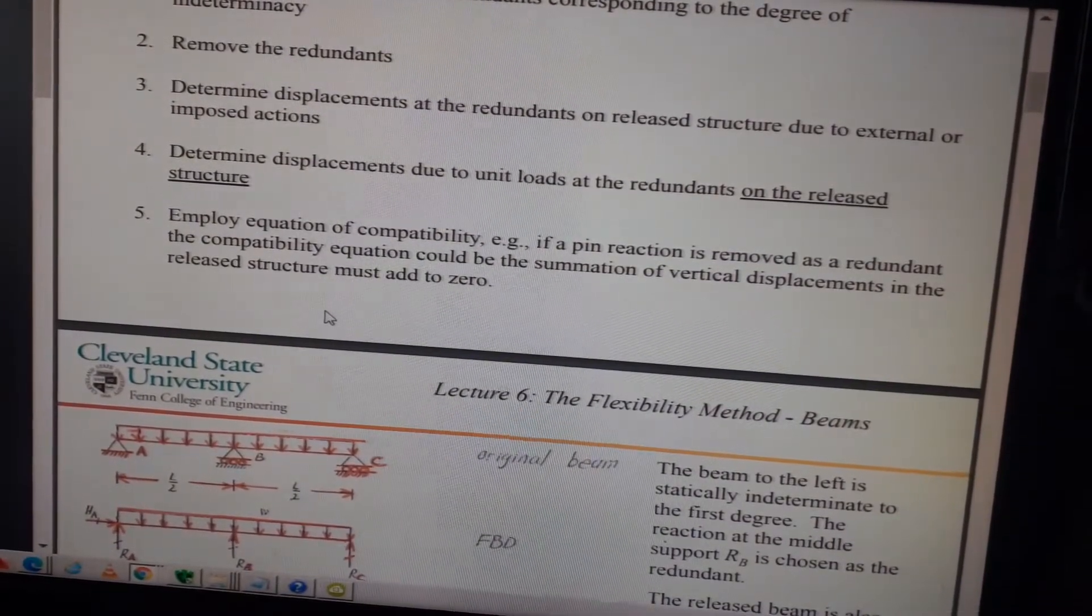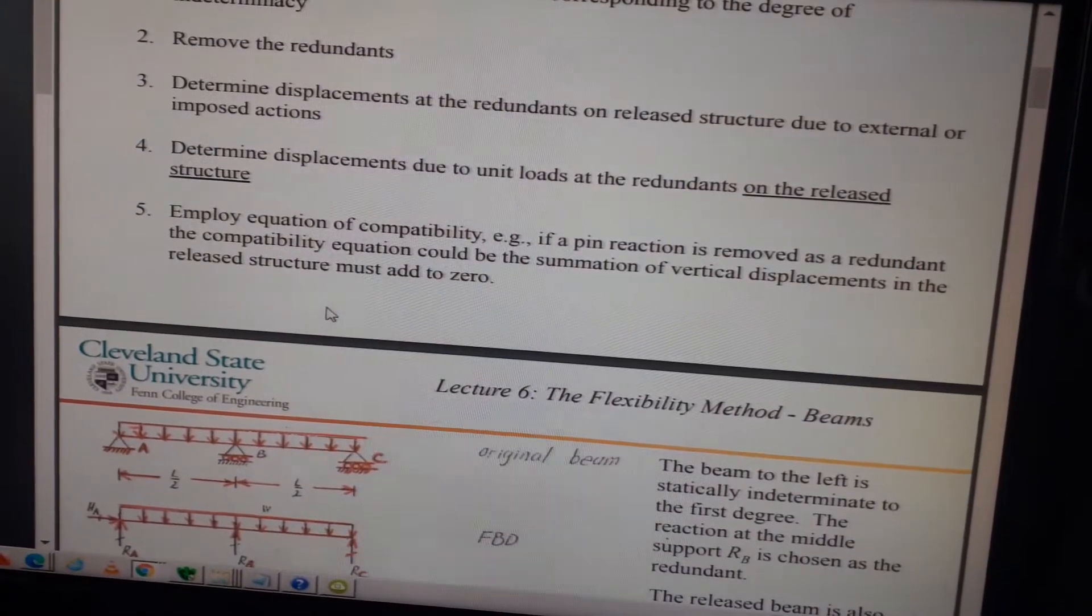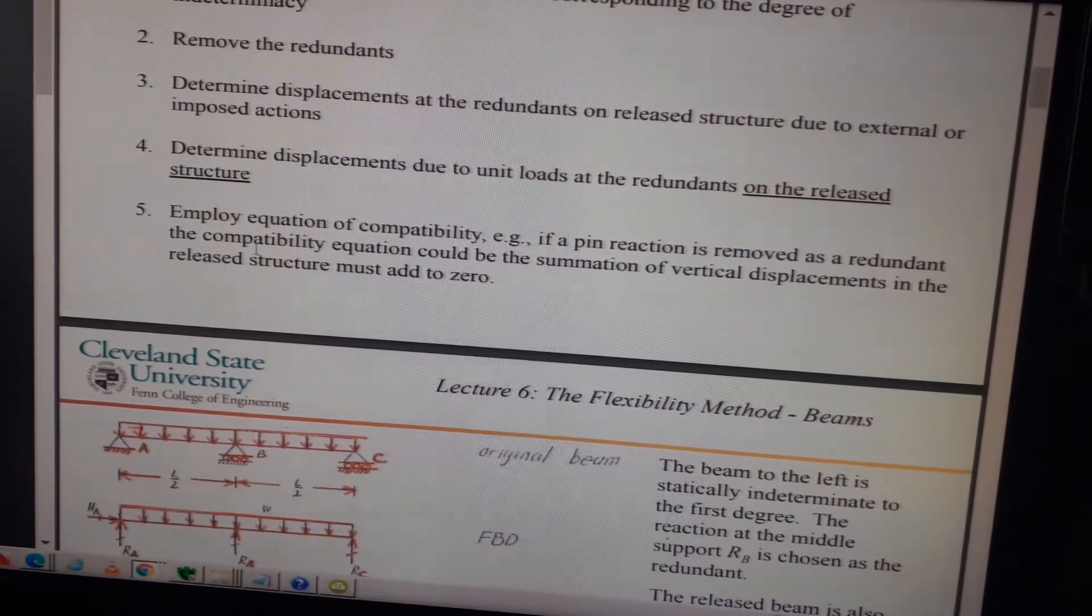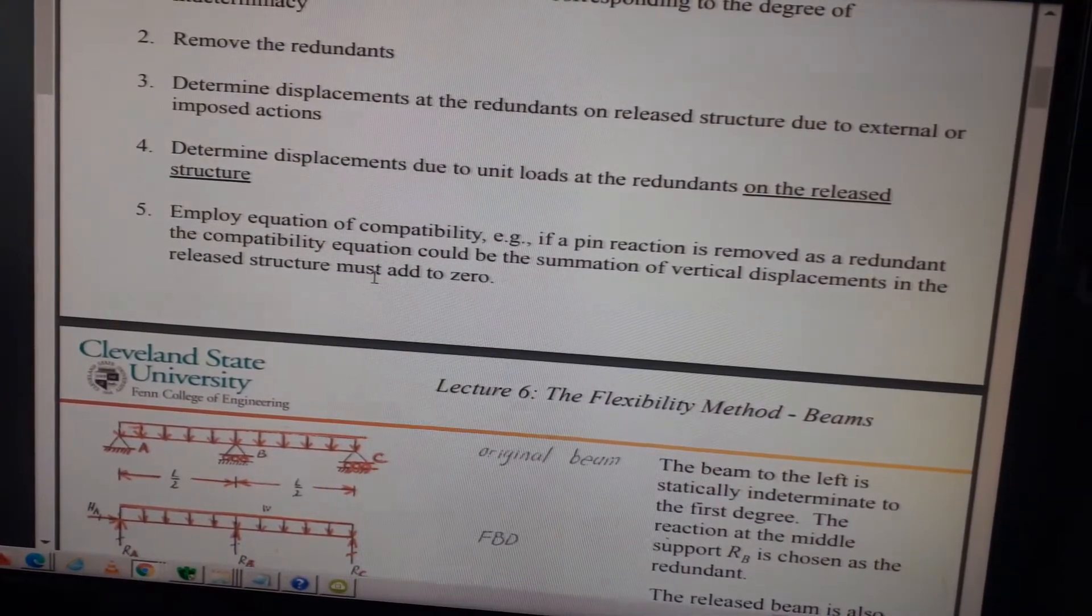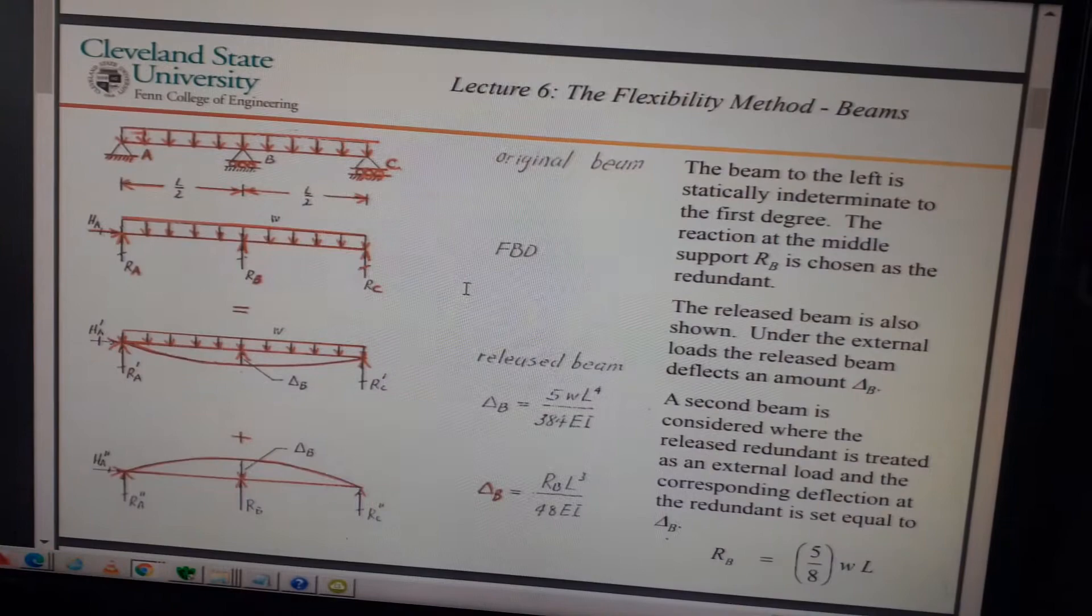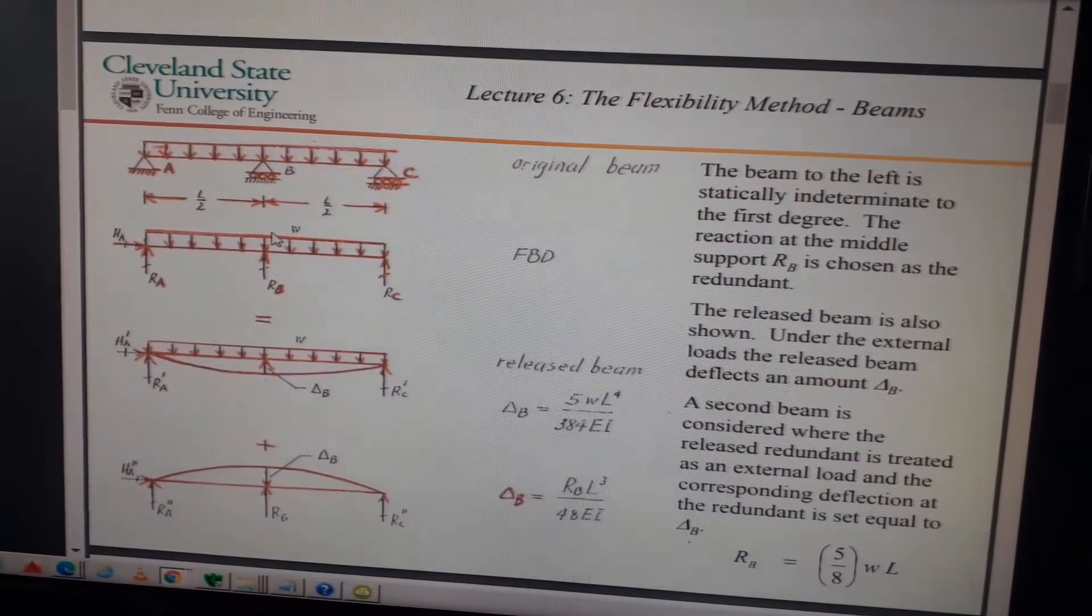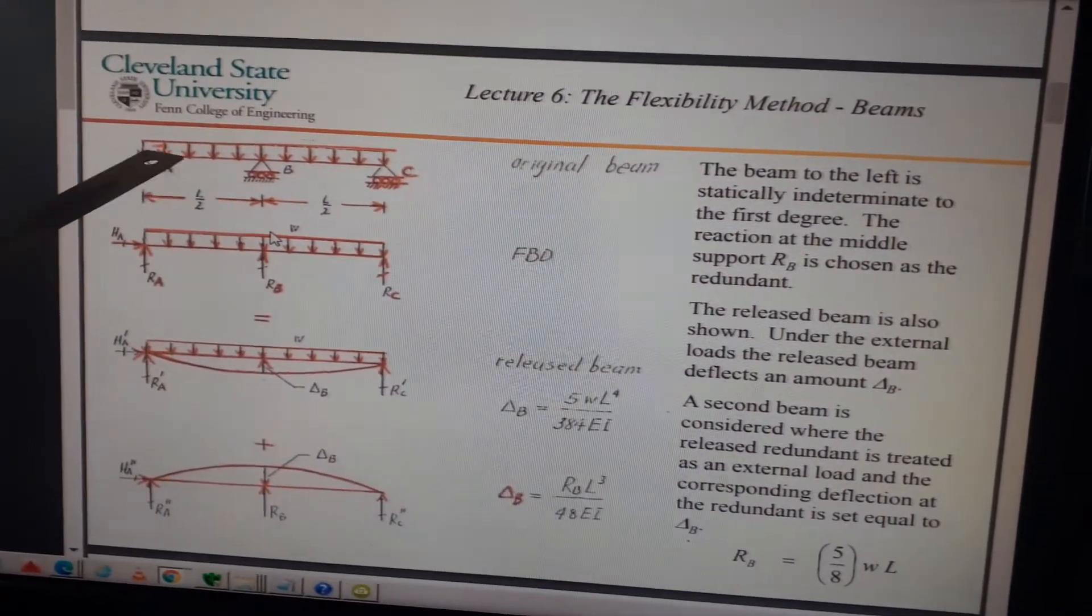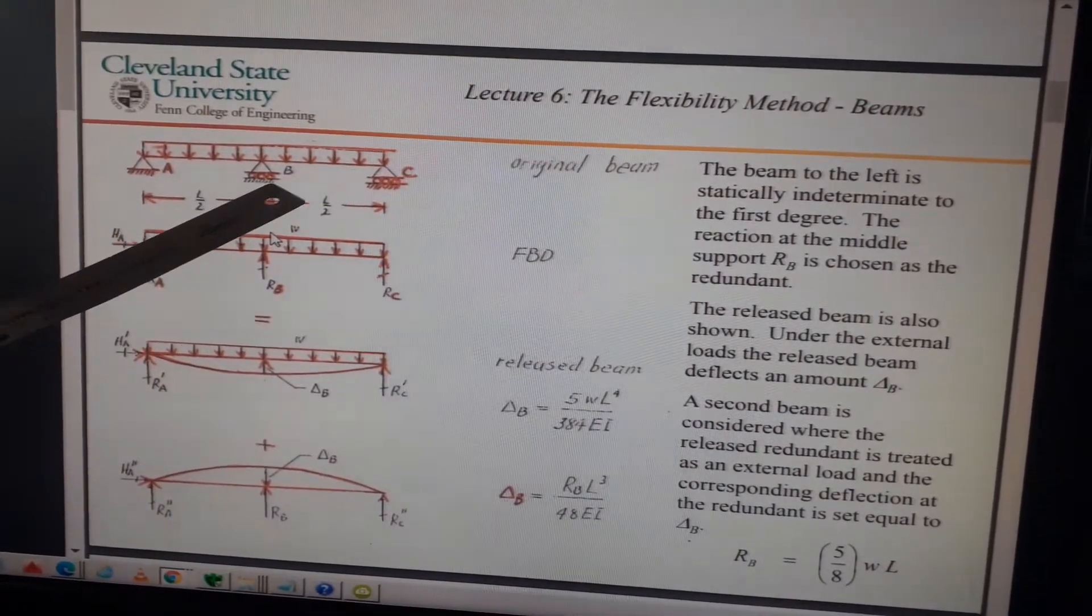Let me read that one more time: Employ equation of compatibility - e.g., if a pin reaction is removed as a redundant, the compatibility equation could be the summation of vertical displacements in the release structure must add to zero. This is slide number three - this is exactly what I was taught at university. You've got a two-span beam, two-span continuous beam.